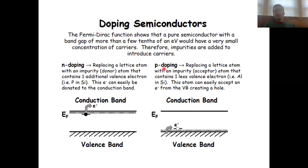When you p-dope, you do the opposite. You can, for instance, p-dope silicon with aluminum. Aluminum has one electron less, so this produces unoccupied states near the valence band. The Fermi level is in between these unoccupied states and the valence band, and you can very easily excite electrons from the valence band into these new unoccupied states. As a consequence, your electrons are now mobile and your electronic conductivity is significantly increased.